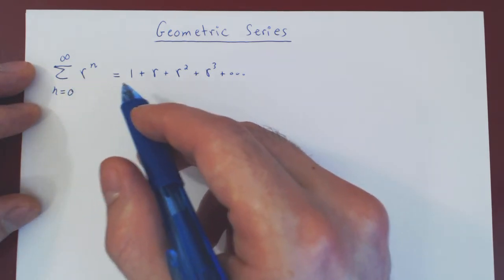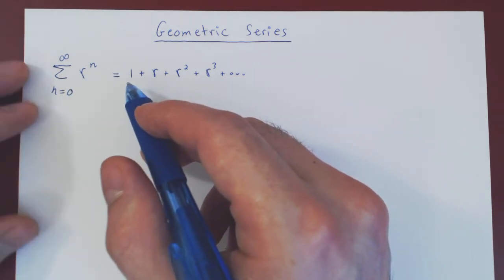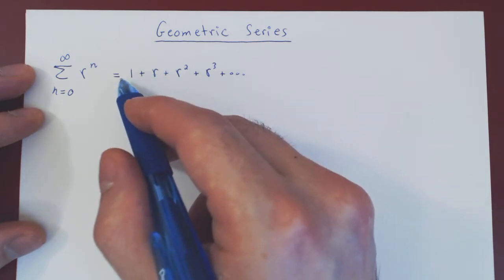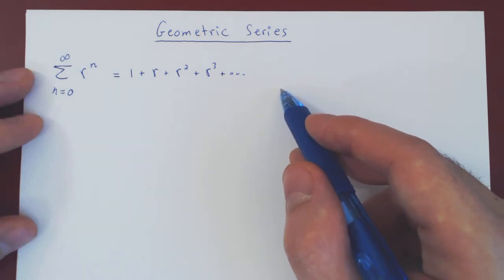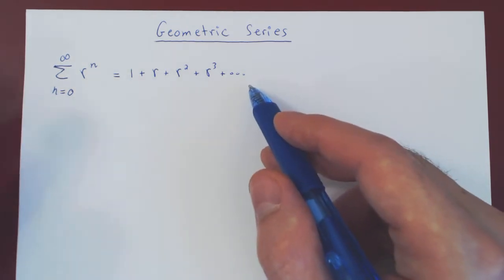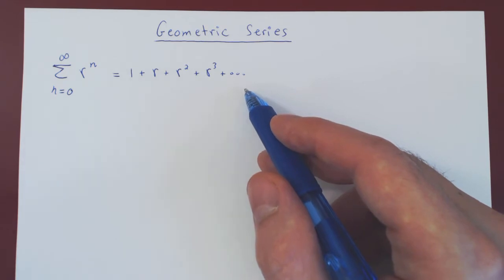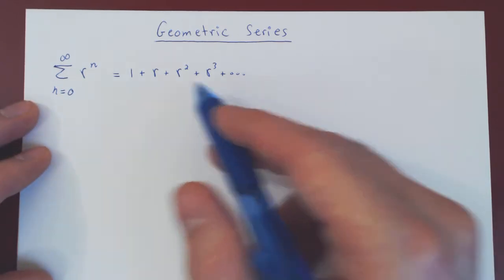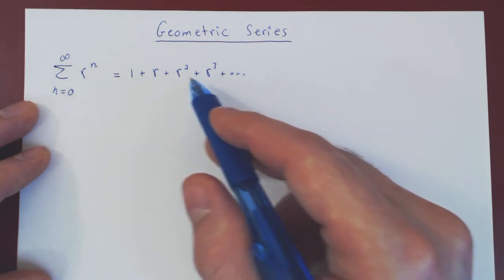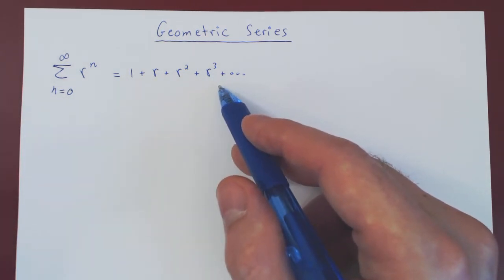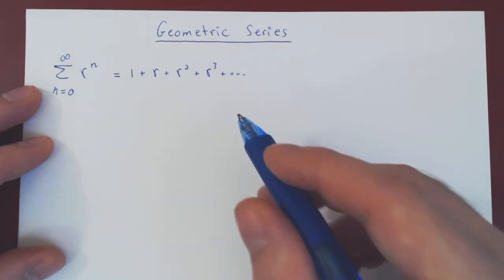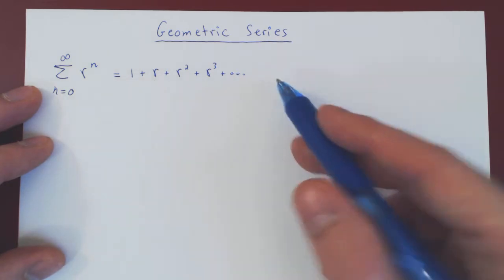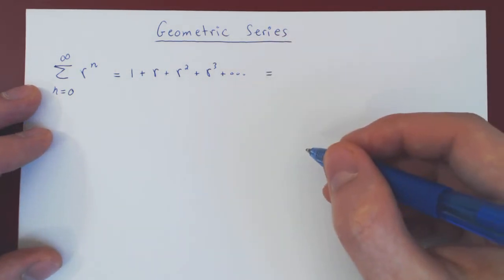Now what we want is two-fold. We want to figure out for which values of r the series converges, and we'll also try to figure out when the series does converge, what value does it converge to. We'll be able to answer both questions in this video. But to do this, we will have to look at the series rigorously, therefore as a limit of the partial sums.